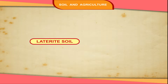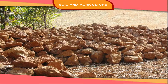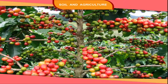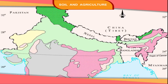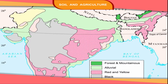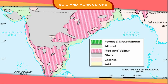Laterite soil is formed from a variety of rocks that are leached in hot, wet climate. It is good for growing tea and coffee. It is found in Andhra Pradesh, Karnataka and the north-eastern states.